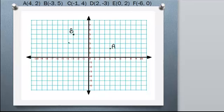Okay, how about C? Negative 1, 4. That's 1 to the left and then 4 up.